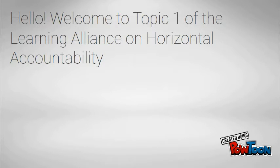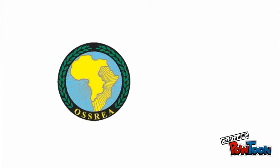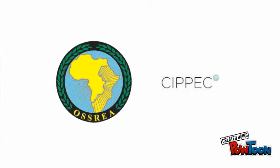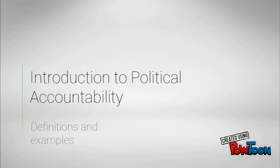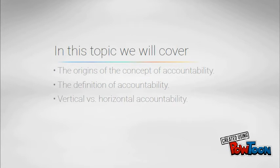Hello and welcome to topic 1 of the Learning Alliance on Horizontal Accountability. This Learning Alliance is part of the ELA program and will be run by Austria and CPEC. The name of this topic is Introduction to Political Accountability: Definitions and Examples. In this topic we will cover the origins of accountability, the definitions of the concept, the distinction between vertical and horizontal accountability, as well as some examples.